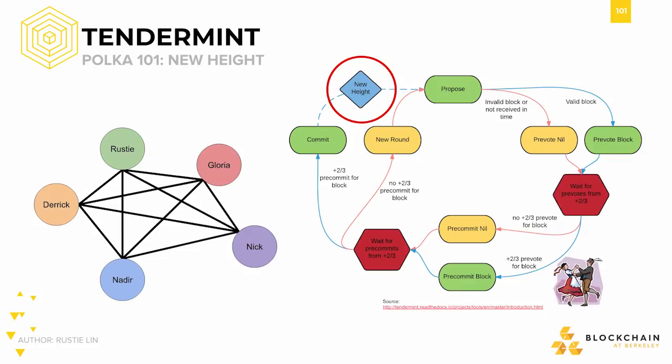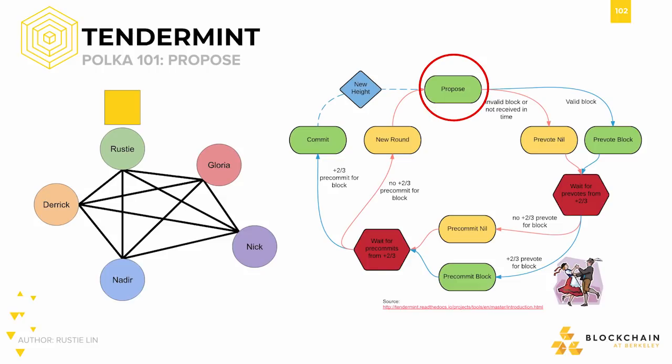We start off in the new height phase. In this step, we select a validator to propose the new block. Tendermint does this with a round-robin selection algorithm that selects proposers in order of their voting power, which in the case of proof-of-stake is however much each validator decides to stake. Let's say Rusty gets chosen as the proposer, so in the propose phase, he proposes the next block — that's the yellow block on top of his name. The next phase is pre-vote. Since we have five validators, we need at least four to pre-vote the block to reach the greater than two-thirds threshold. Remember that Tendermint is partially synchronous, so we stop waiting after the timeout and assume the rest are pre-vote nil.